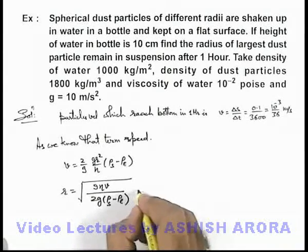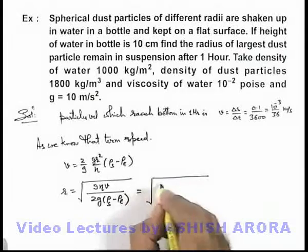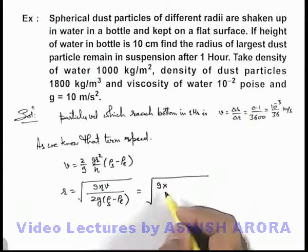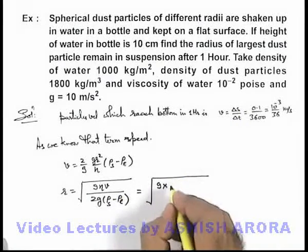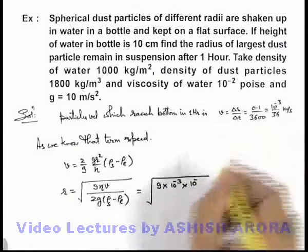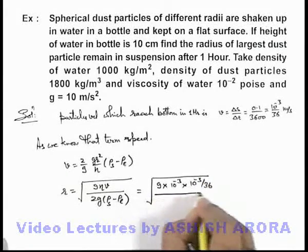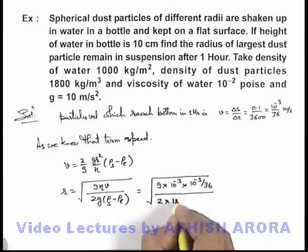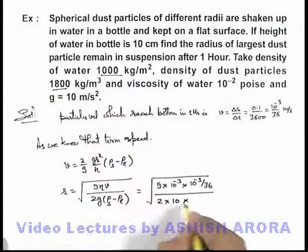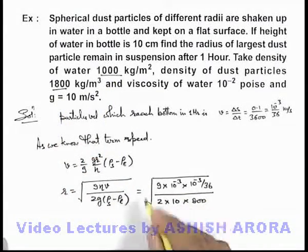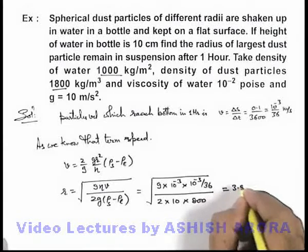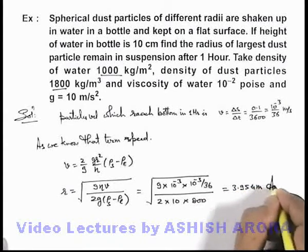Substituting the values: η is given as 10 to the power minus 2 poise, which in SI units is 10 to the power minus 3 pascal-seconds. The speed v we already calculated as 10 to the power minus 3 by 36. Divided by twice of g which is 10, and density of dust particle minus density of liquid is 1800 minus 1000, which equals 800. After simplifying the calculation, we finally get the value of the radius as 3.95 micrometers.